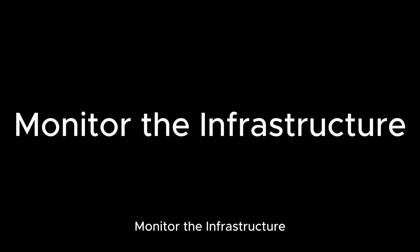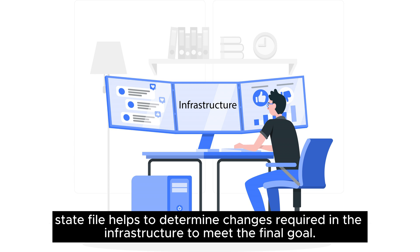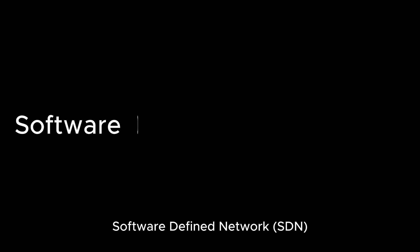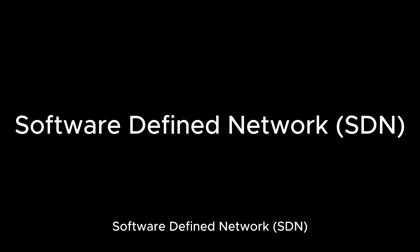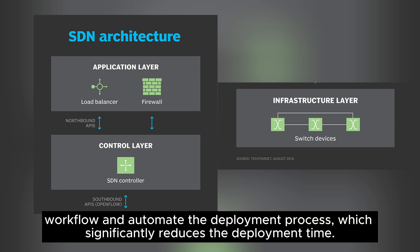Use cases of Terraform. Monitor the Infrastructure: Terraform uses a state file to keep track of resources. Whenever resources change state, the file helps to determine changes required in the infrastructure to meet the final goal. Software Defined Network: Terraform's ability to communicate with the SDN allows it to move ticket-based workflow and automate the deployment process, which significantly reduces deployment time.